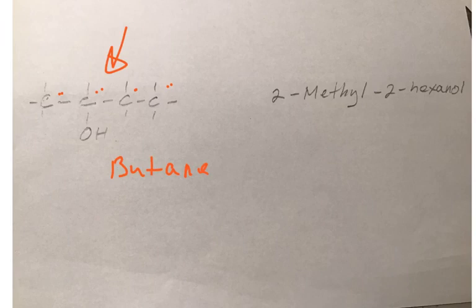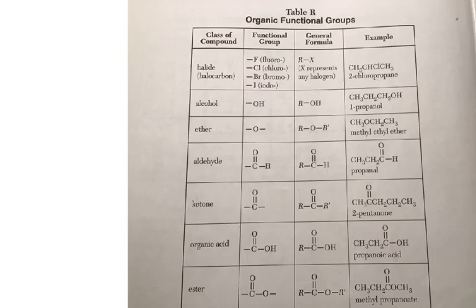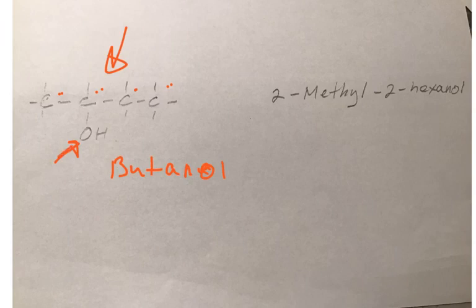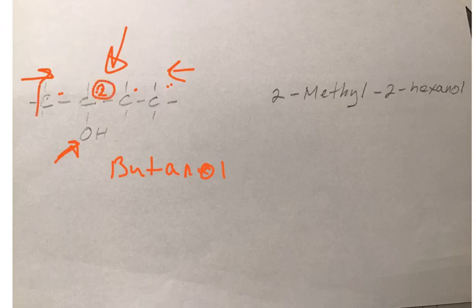But we have to modify that name because we have an OH group. If you forget what an OH functional group naming is, you don't panic — you flip to table R and scroll through it. Who has an OH group? Alcohols. And you notice alcohols always have an OL ending. So we're going to drop this E and add OL. The name is going to be butanol.